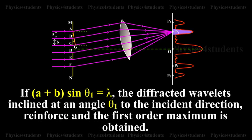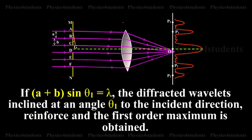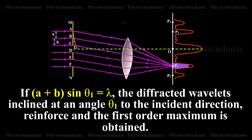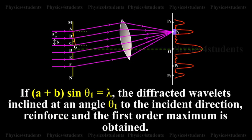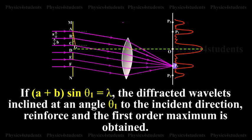If A plus B into sin theta 1 equals lambda, the diffracted wavelets inclined at an angle theta 1 to the incident direction reinforce and the first order maximum is obtained.